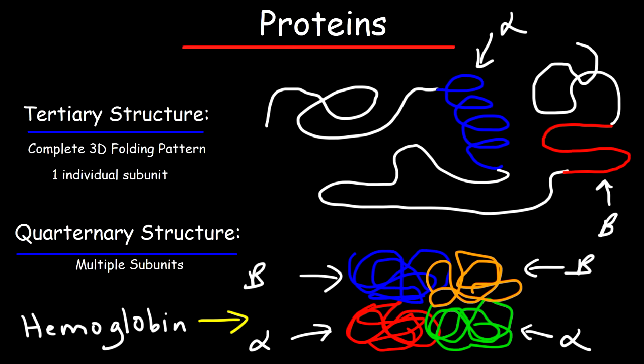When you combine multiple subunits you create a quaternary structure. So hemoglobin is an example of that. It has four individual subunits: two alpha subunits and two beta subunits. So hemoglobin is a protein with a quaternary structure.